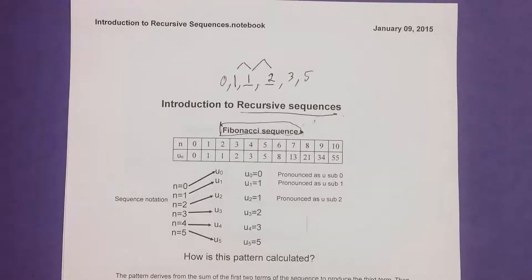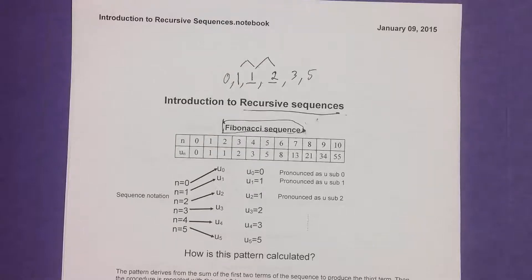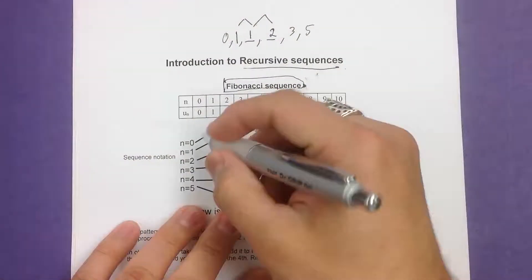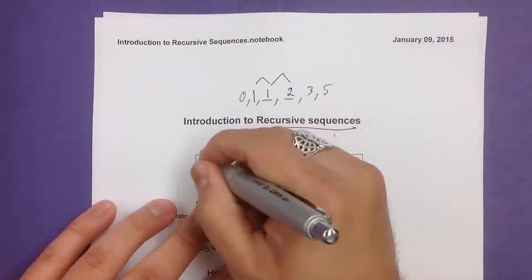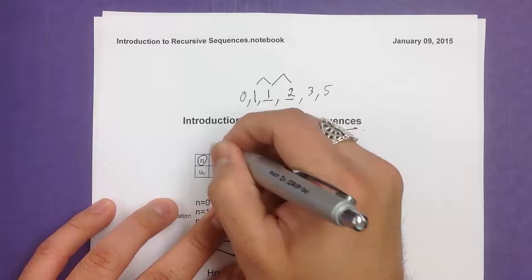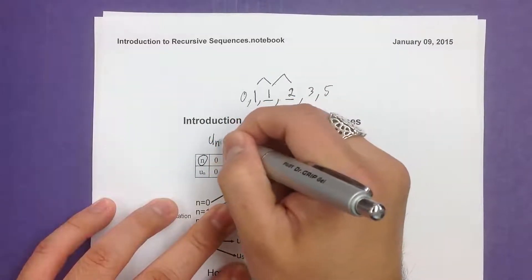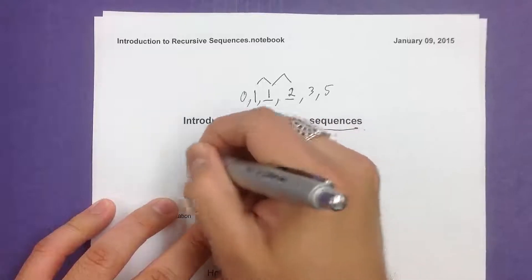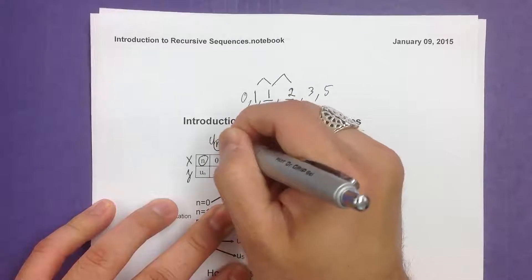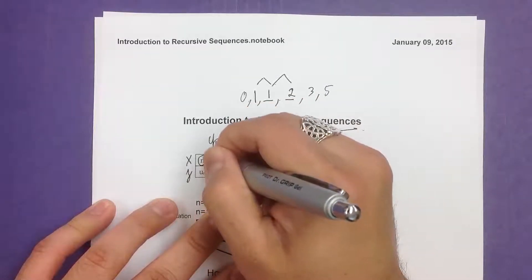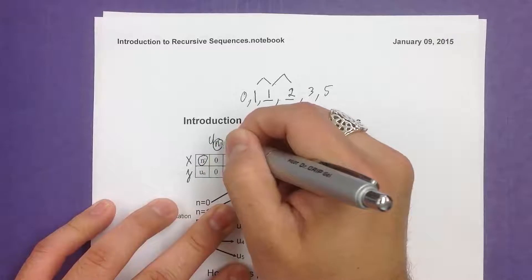But in mathematics, we use something to actually put this into a more formal way of writing this, and that's called the recursive formula. So to help us out, I have our recursive sequences, and we use something called arrays. Now, n stands for the number that would go right here. So you have u sub n. Basically, whatever number, this is like saying this is x and this is y. So this would replace this number.